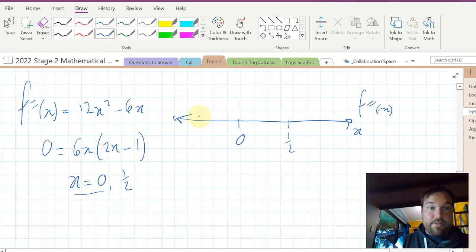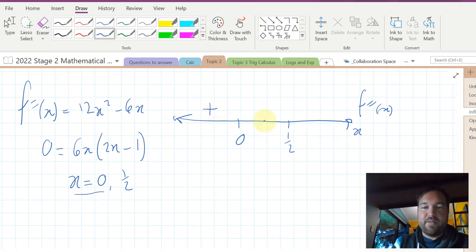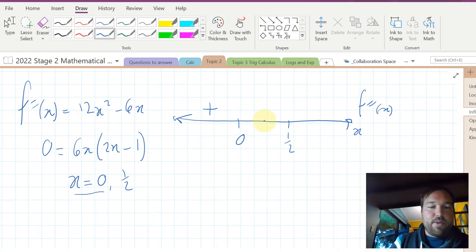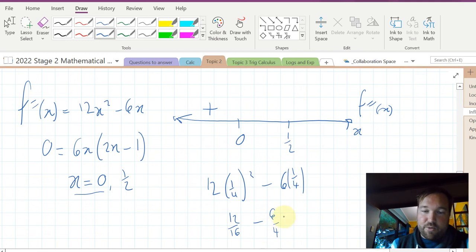Now we sub in, say, minus 1. If we sub in minus 1, 12 lots of minus 1 squared, that's really 12 lots of 1, minus 6. That's going to be positive. Then, after zero, so between zero and a half, we have, say, a quarter. You could do 12 lots of a quarter squared minus 6 quarters. 12 lots of a quarter squared is 12 over 16 minus 6 on 4. You don't have to fully work it out, but 6 on 4 is more than 1, 12 on 16 is less than 1, so that's going to be negative.